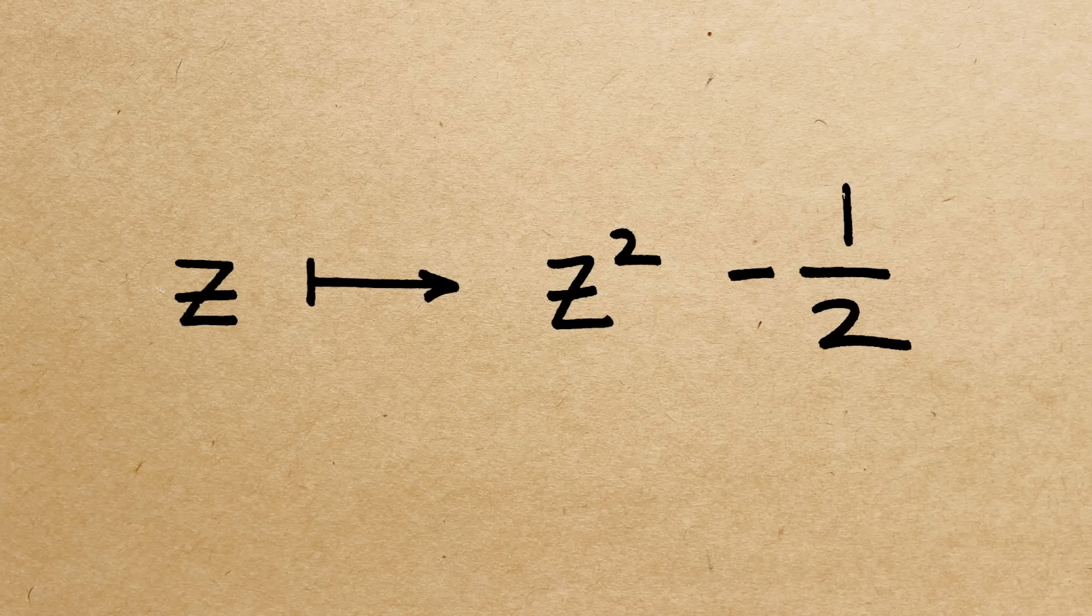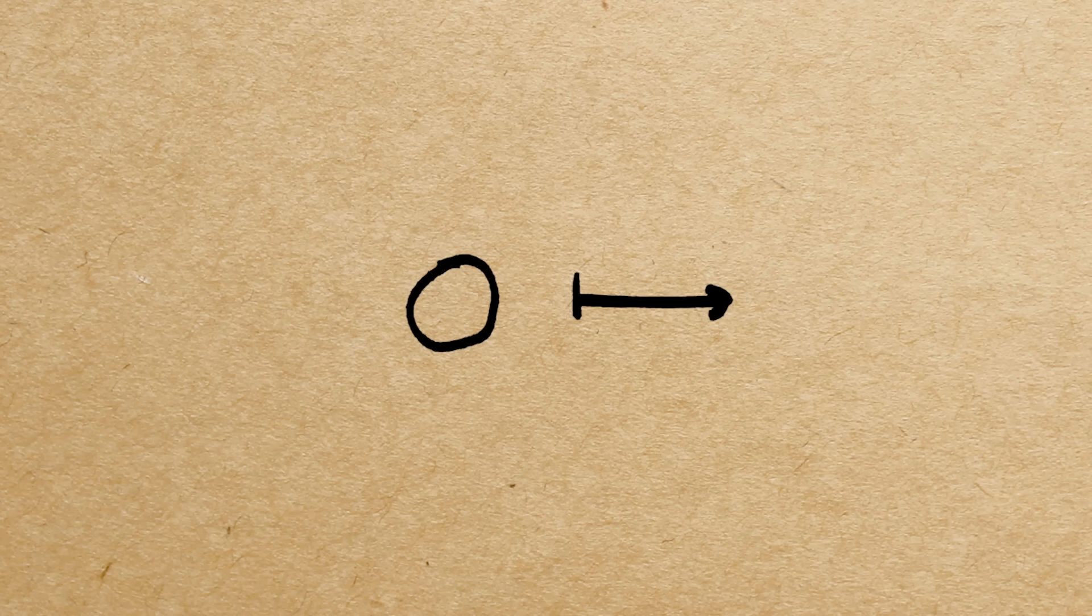So I take a number, I square it, and I subtract one half, and then I repeat the process. Let's do an example. So the number I want to deal with here is zero. So if I take zero and I square it, and I subtract a half, the next number I get is minus a half.